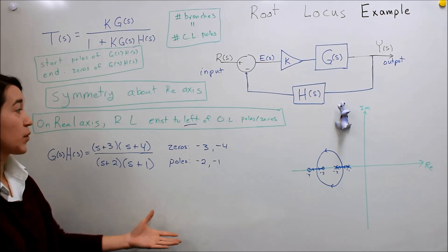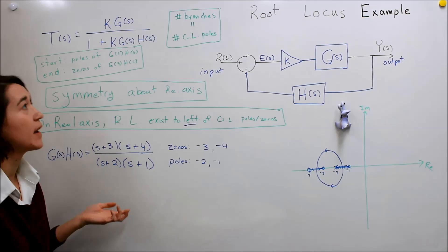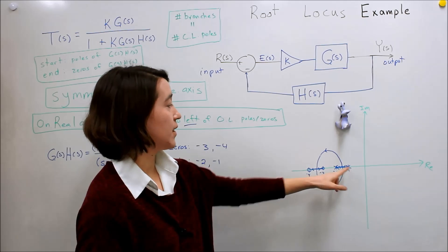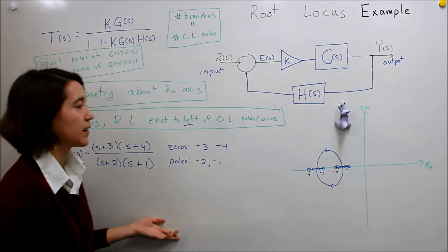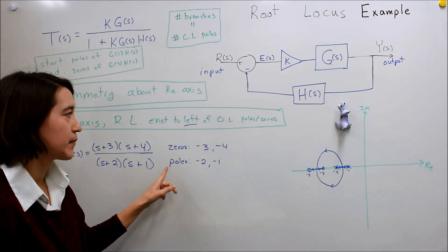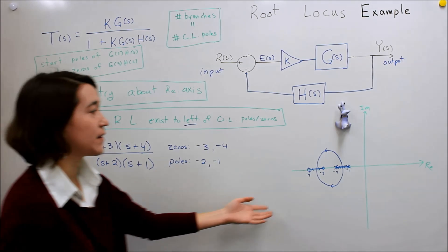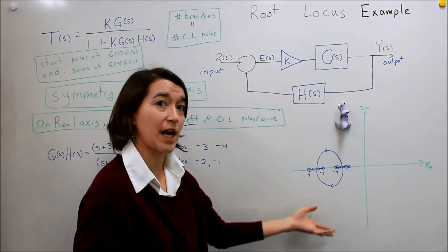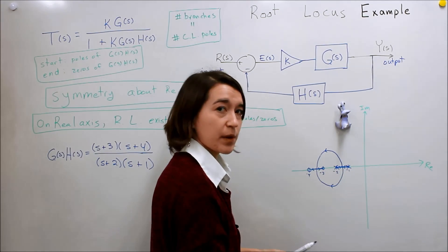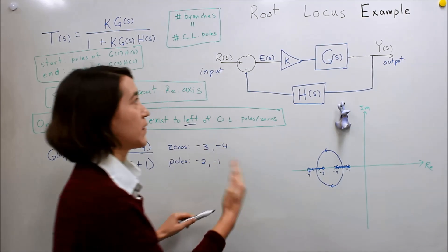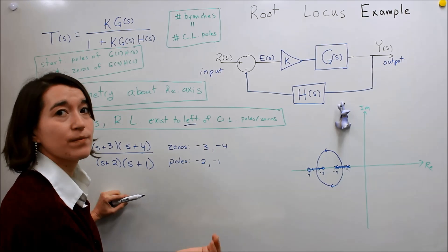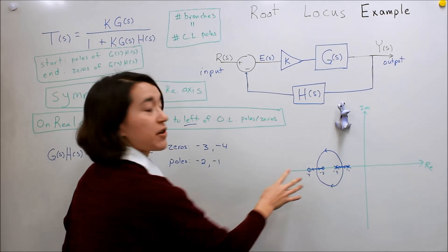This is the basic sketch for the root locus of this system. As we vary k, the poles start from the two starting points and move towards the two zeros. One important thing to note is that all poles and zeros are in the left half plane — they're all negative. So the system will always be stable regardless of what k is. The more important case is when things go into the right half plane, where we have to evaluate what value of k gives a stable system. For this one, we can pick any value of k and it will be stable — it just changes how the system reacts based on where the poles end up.